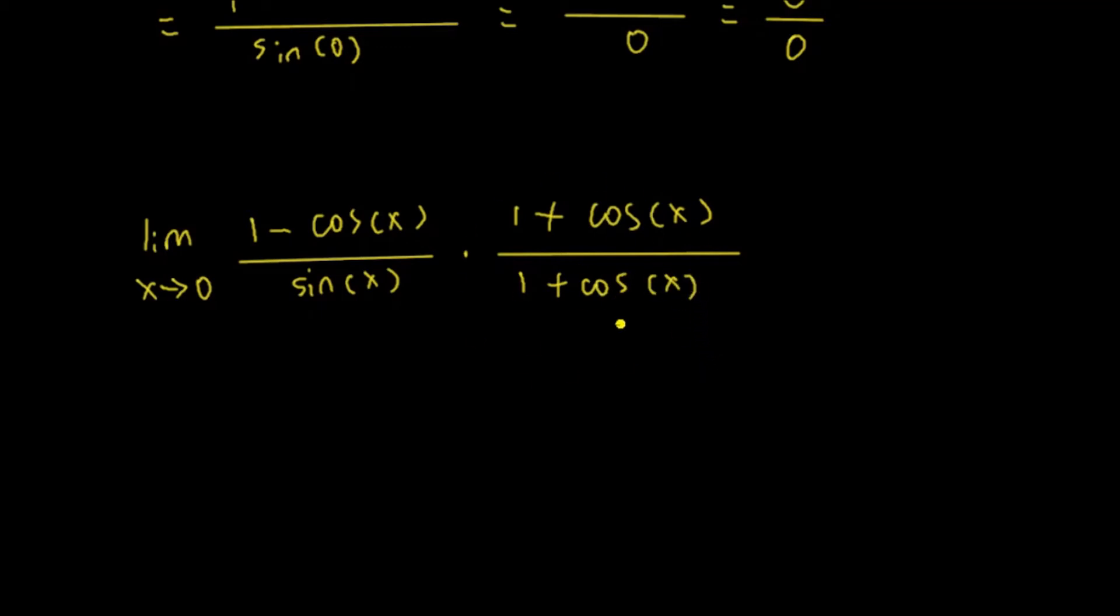Because that's just 1, anything multiplied by 1 is still that something, so I have not actually changed the original limit. But the top here would have become, this limit as x approaches 0, the top would be 1 minus cosine square x, divided by sine x times 1 plus cosine of x.